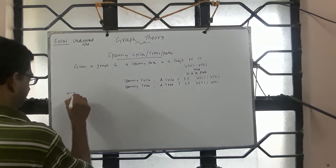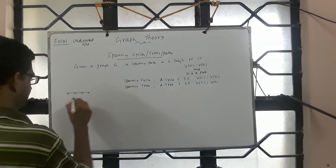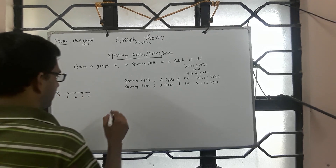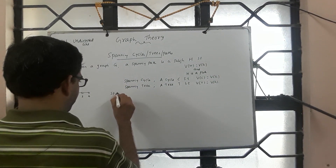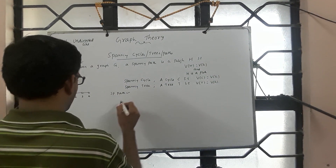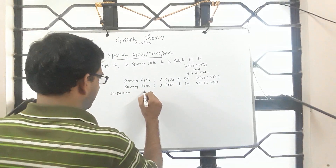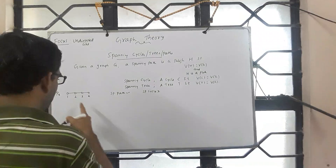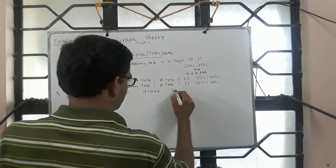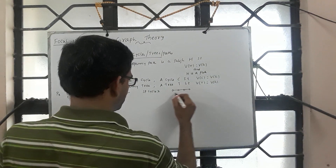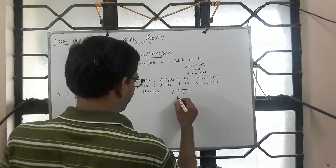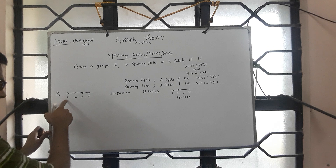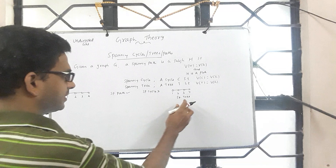Suppose the graph itself is a path — for example P4. Then it has a spanning path (the graph itself), but no spanning cycle. Also, the path itself is a tree, so the spanning tree is one and the same. All paths are connected and acyclic, so all paths are trees.